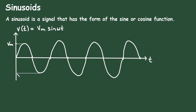On the negative side this will be negative Vm, and this will be 0. From here, from 0 to this point is one complete cycle. This is one complete cycle, after that it is repeating again and again. From 0 to this point it is called the time period T.